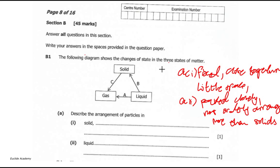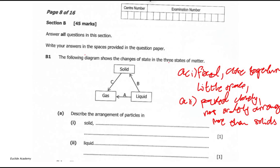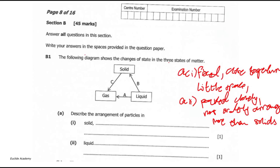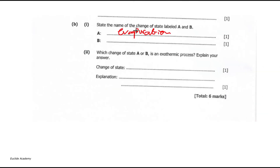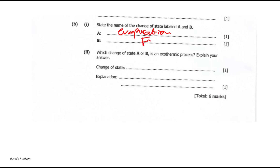Moving to the next question: state the name of the change of state labeled A and B. From liquid to gas, A will be evaporation or vaporization. Then B is from liquid to solid — we can think of water freezing to ice, so B is freezing.